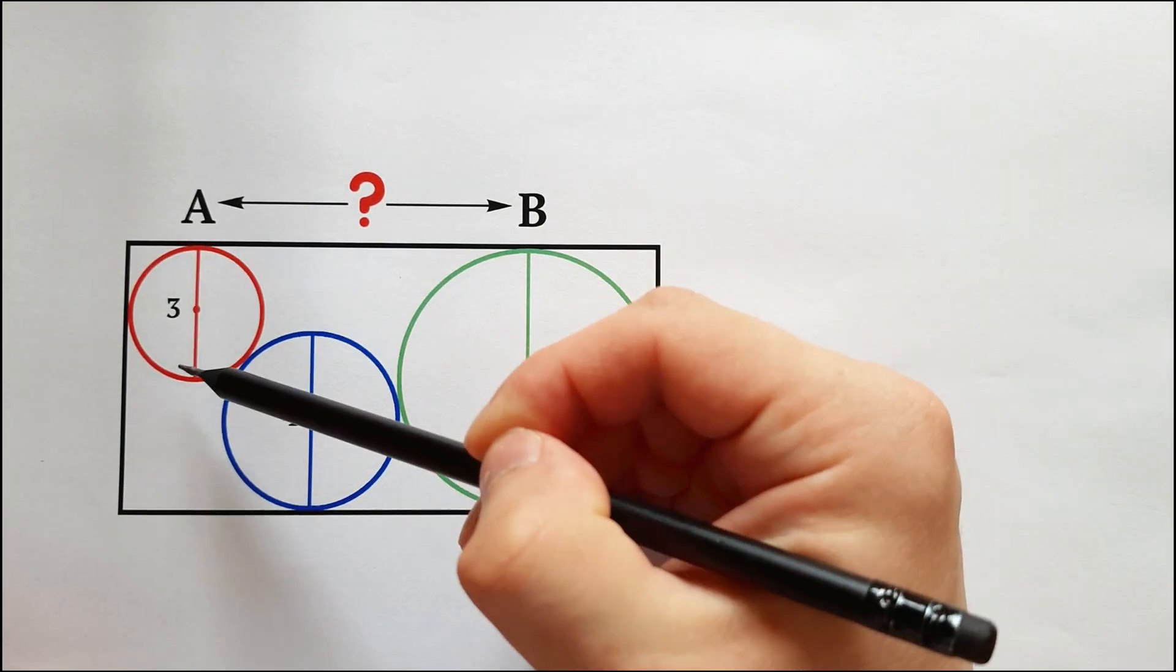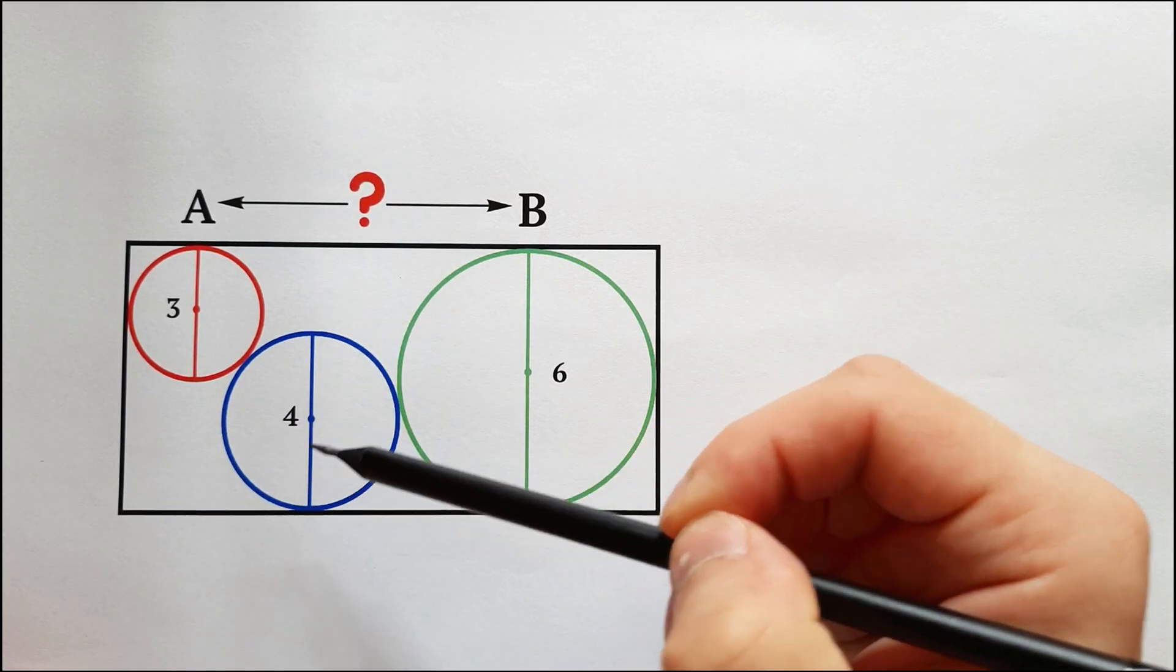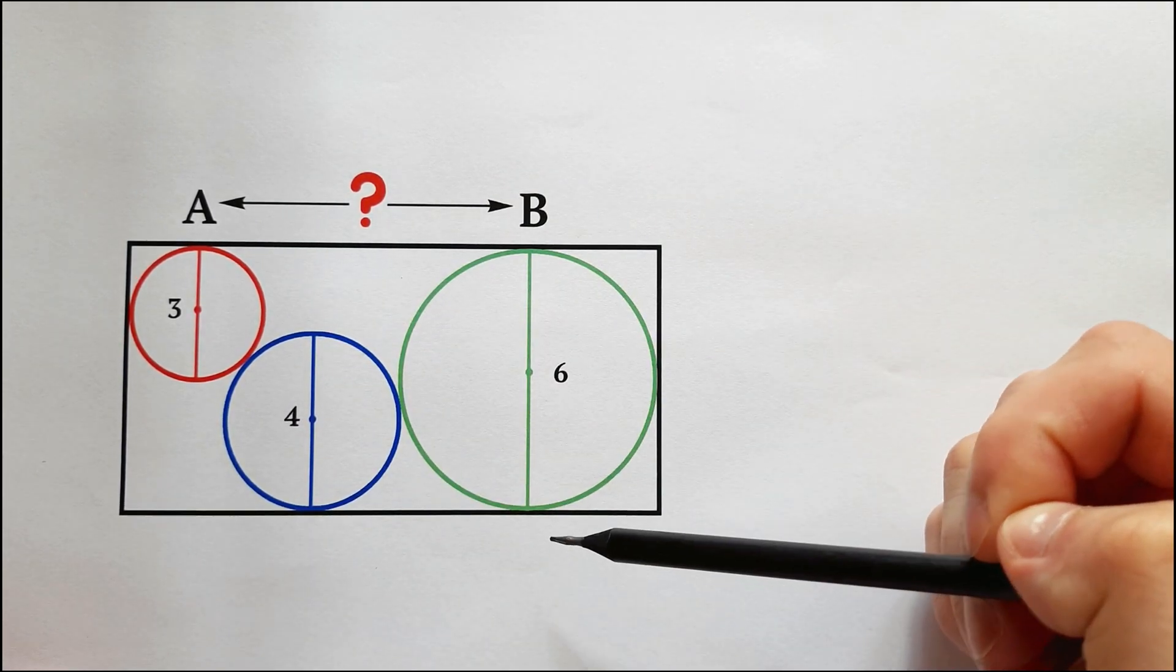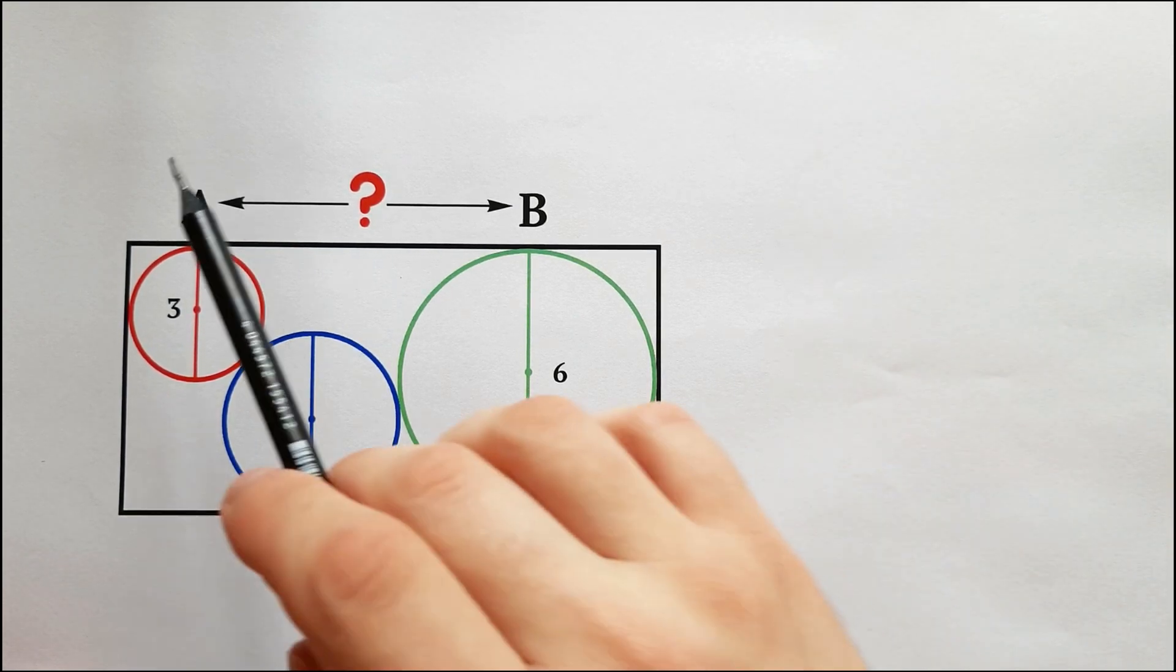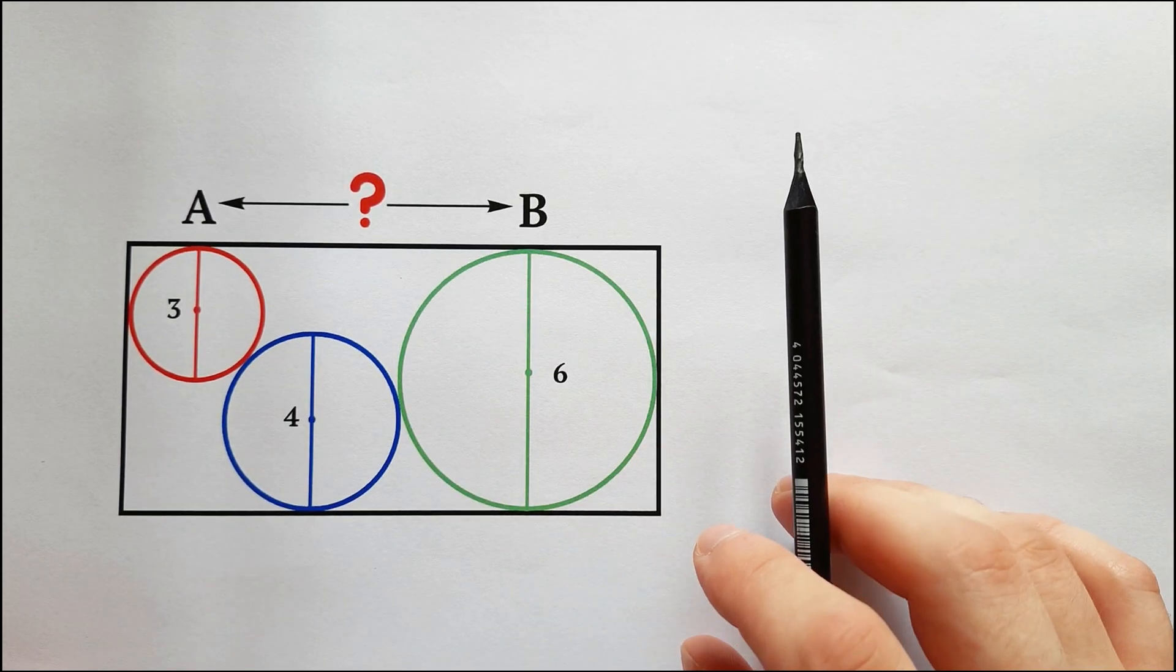We also know the diameters of our circles. The red one is 3, the blue is 4, and the green one is 6. With this information in mind, could you determine the distance between points A and B within 5 seconds?